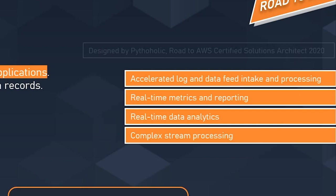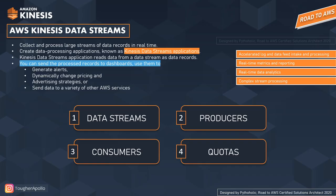The fourth use case is complex stream processing — you can transfer data from various Kinesis Data Stream applications to another stream for downstream processing through different Kinesis Data Stream applications. So if you already have a Kinesis Data Stream application, you can downstream that data to process it using another consumer or another Kinesis Data Stream application. To understand the working mechanism of AWS Kinesis Data Streams, we need knowledge of four concepts: data streams, producers, consumers, and quota.